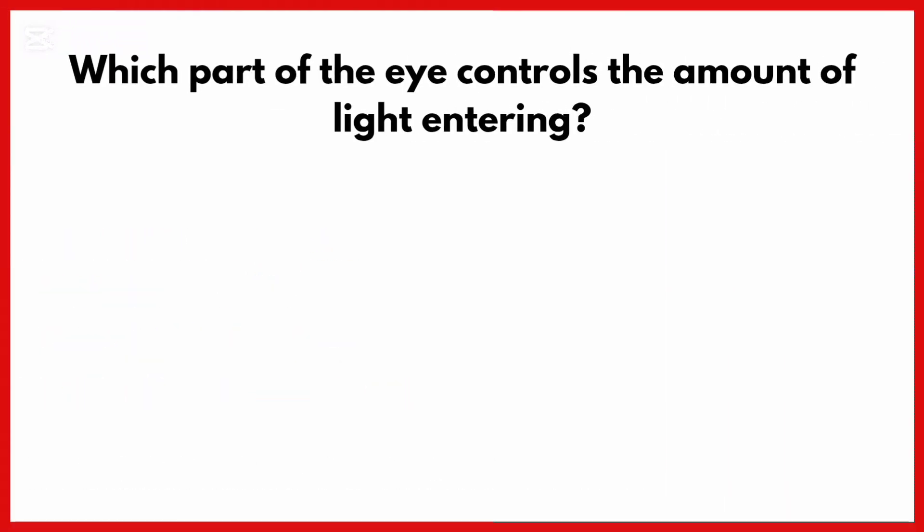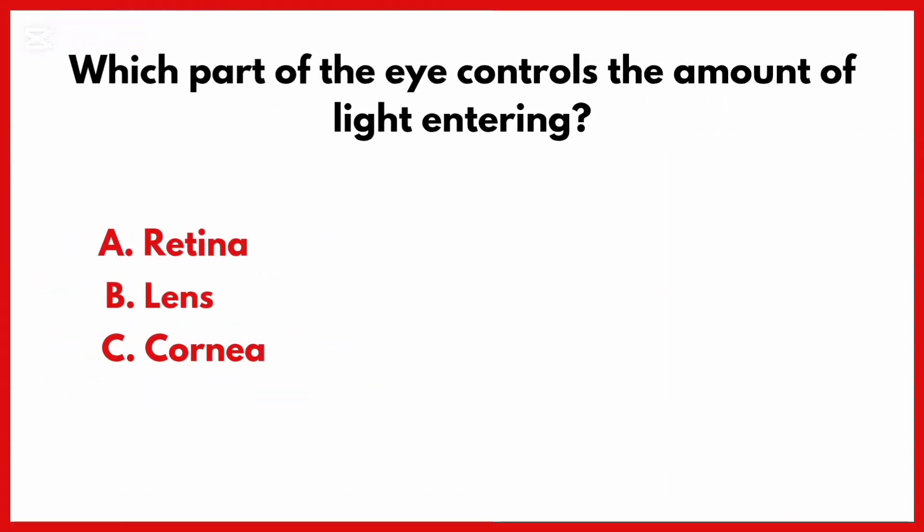Which part of the eye controls the amount of light entering? Correct answer is option D: Iris.